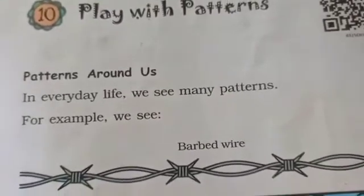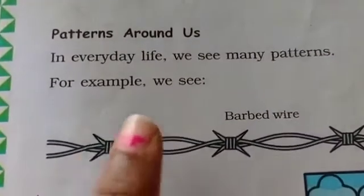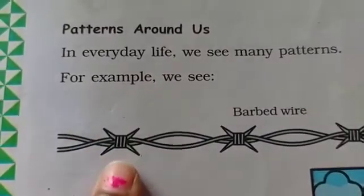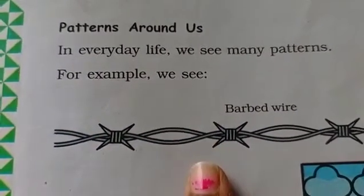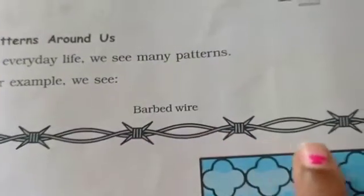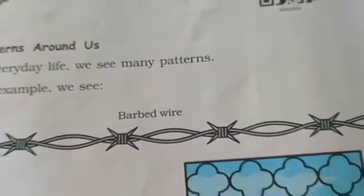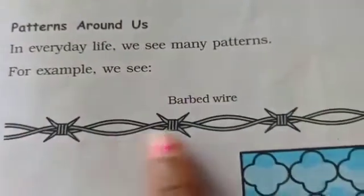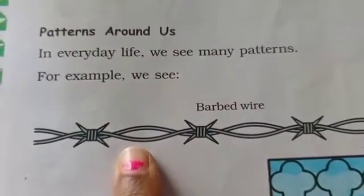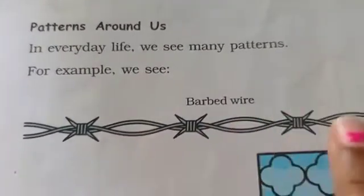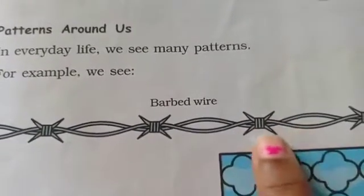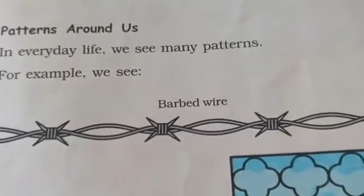we see barbed wires. You have to see here. It goes joining, then crossing, then joining, crossing, joining, crossing, joining, crossing. So this was a repeated pattern — what is here is repeated there, and what is there is repeated here. This is a repeated pattern.